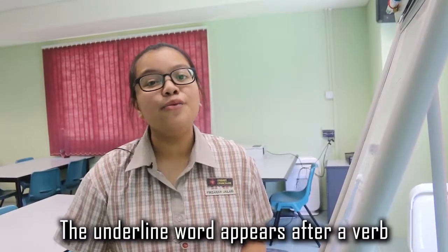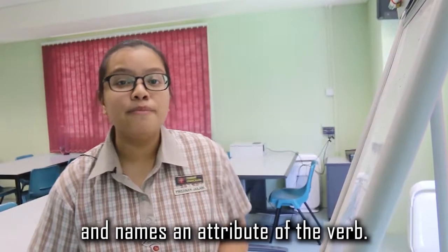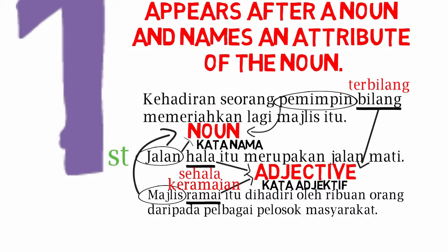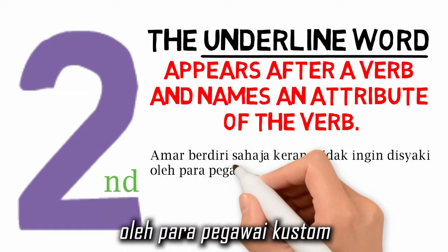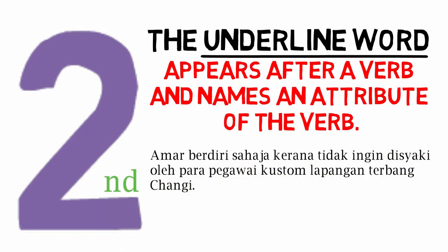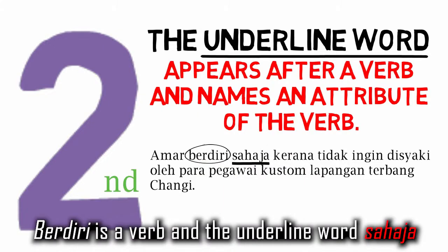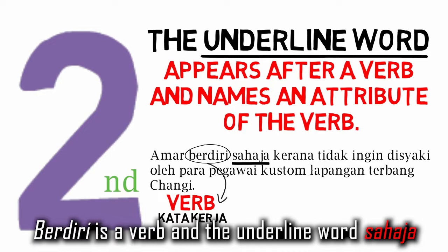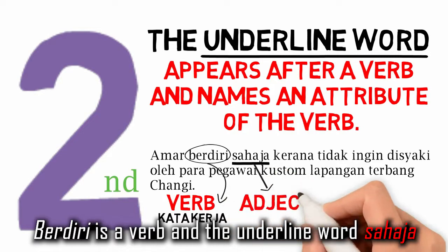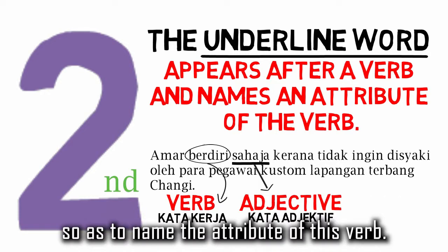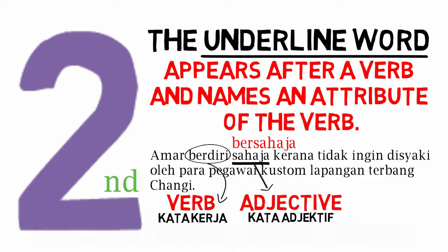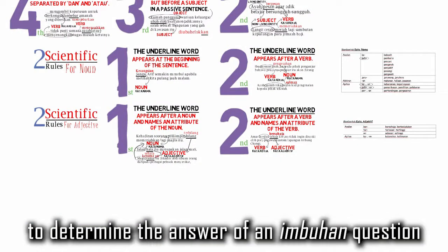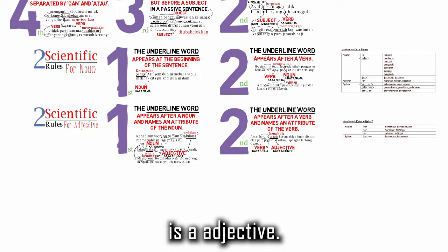The second rule for adjectives: the underlined word appears after a verb and names an attribute of the verb. For example, 'Amar berdiri sahaja kerana tidak ingin disyaki oleh para pegawai kastam lapangan terbang.' Berdiri is a verb, and the underlined word sahaja has to be turned into an adjective to name the attribute of this verb. So the answer for the example given here is bersahaja. In summary, these are the two scientific rules to determine the answer of an impohan question is an adjective.